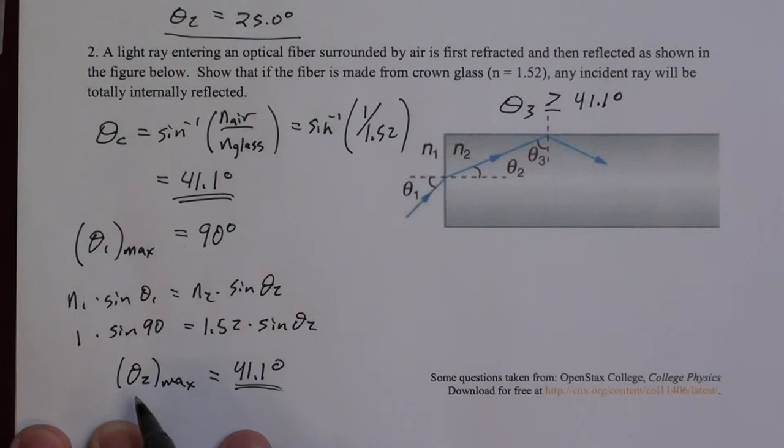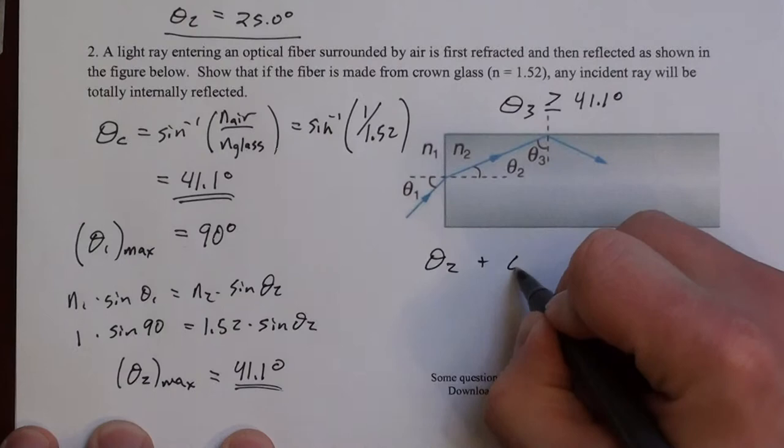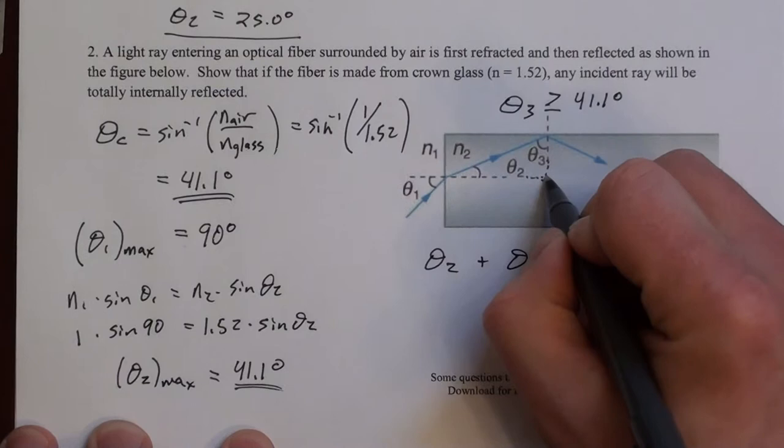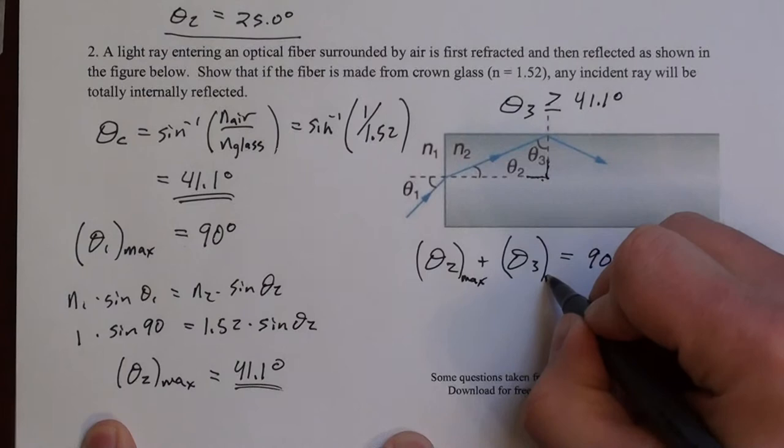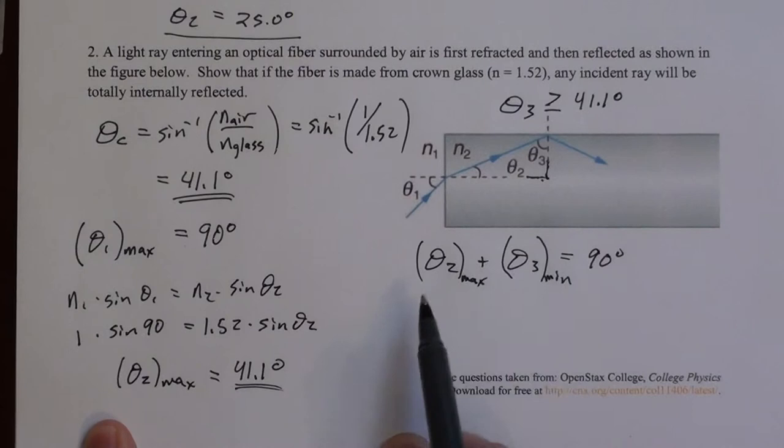Okay, so now we should say this maximum for theta 2, what does that mean for theta 3? Well, notice here that theta 2 plus theta 3 has to be 90 degrees. They are both parts of this right triangle here. So theta 2 plus theta 3 is 90 degrees. So if I have a maximum theta 2, that corresponds to a minimum theta 3. Because these are fixed, the sum is fixed to 90 degrees. So if this gets bigger, this is getting smaller. And if this is the biggest, this is the smallest.